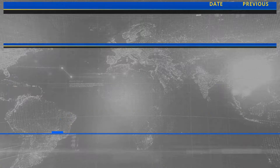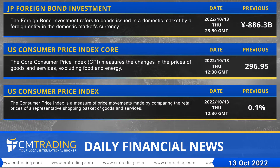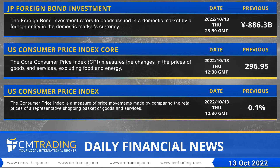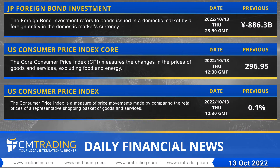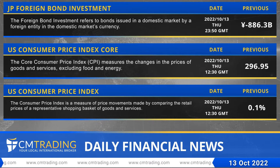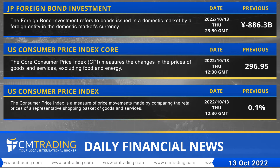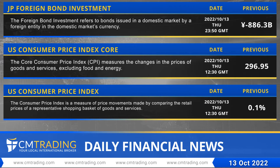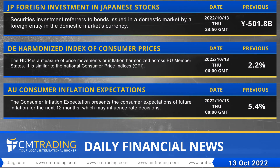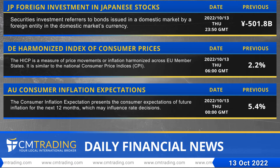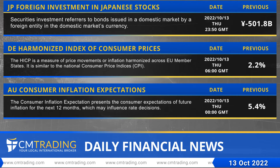Japan's foreign bond investment will be released at 2350 GMT. The US Consumer Price Index core and the US Consumer Price Index headline will both be released at 1230 GMT. Japan's foreign investment in Japan stocks will also be released at 2350 GMT.